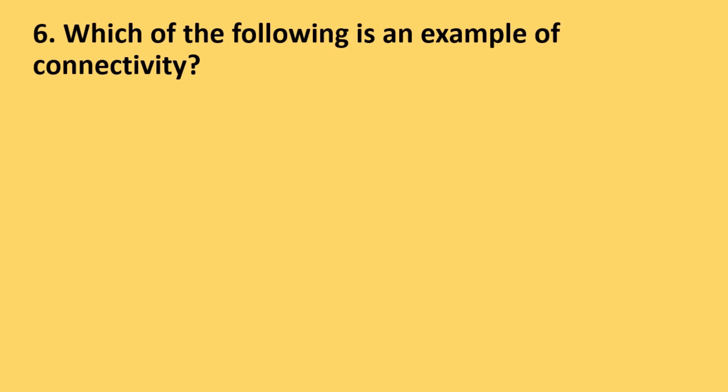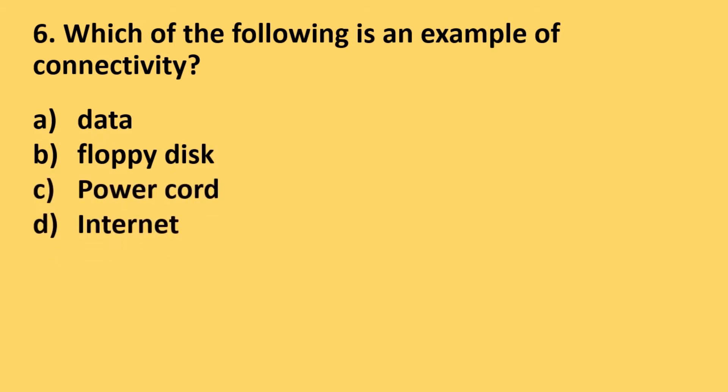Question number 6: Which of the following is an example of connectivity? Options are data, floppy disk, power cord, internet. The correct answer is option D, internet.